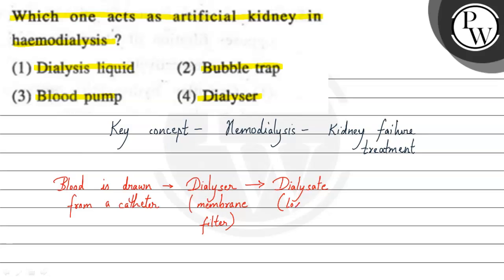The dialyzer removes excess fluid and toxins extracted from the blood. Because there are anticoagulants in the blood, when you process it, blood coagulation is prevented. After that, the cleaned blood is returned to the body.